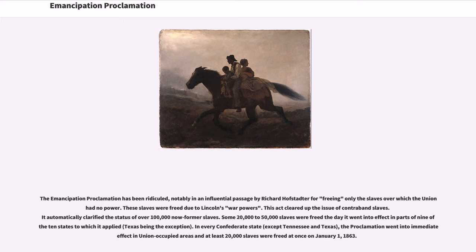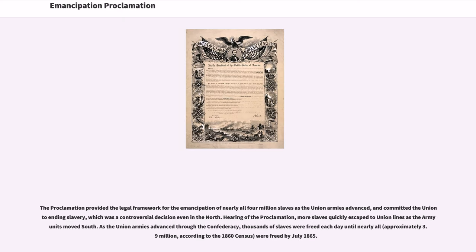The Emancipation Proclamation has been ridiculed, notably in an influential passage by Richard Hofstadter, for freeing only the slaves over which the Union had no power. These slaves were freed due to Lincoln's war powers. This act cleared up the issue of contraband slaves and automatically clarified the status of over 100,000 now former slaves. Some 20,000 to 50,000 slaves were freed the day it went into effect in parts of nine of ten states to which it applied, Texas being the exception. In every Confederate state except Tennessee and Texas, the proclamation went into immediate effect in Union-occupied areas, and at least 20,000 slaves were freed at once on January 1, 1863. The proclamation provided the legal framework for the emancipation of nearly all four million slaves as the Union armies advanced, and committed the Union to ending slavery, which was a controversial decision even in the North.